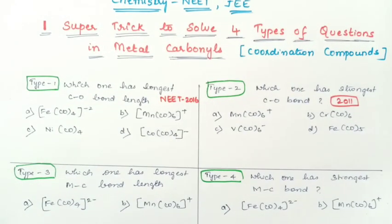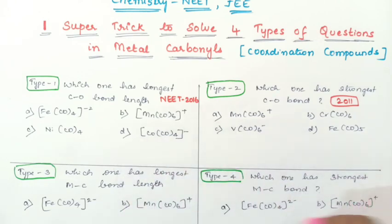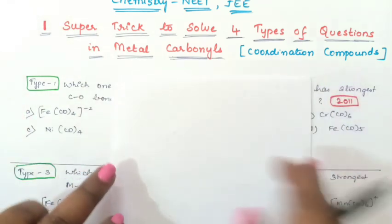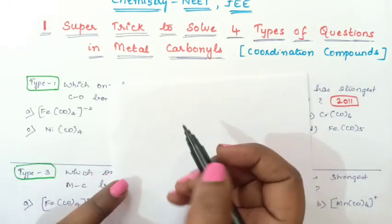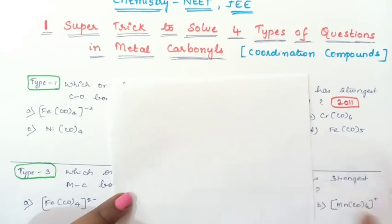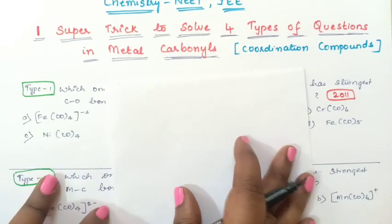If such type of question arises, you can use one simple trick to solve all these four types of questions. We will see that trick now. You should know what is backbonding in metal carbonyls.